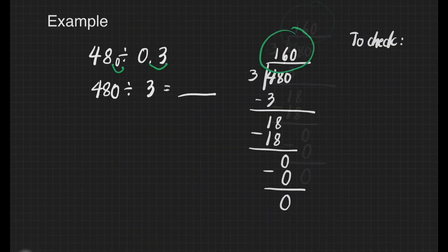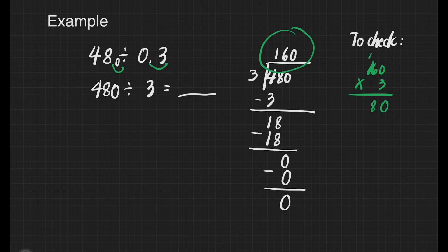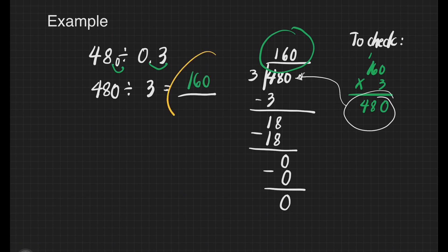But we have to check that. We will just multiply 160 and 3. 0 times 3 is 0, 6 times 3 is 18, carry 1, 3 times 1 is 3, plus 1 is 4 — giving us 480. This is equivalent to our dividend, which is also 480. It means 160 is correct. And that's it.